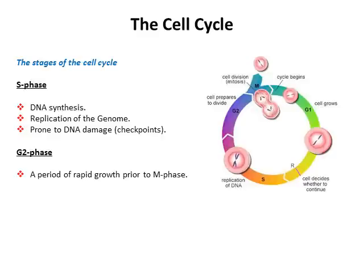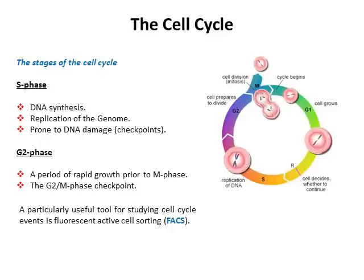Once the cell enters S phase and replicates its DNA — with no damage events, everything okay — it will then exit S phase and enter G2. G2 is a relatively short phase, a period of rapid growth prior to M phase. Following replication of the DNA, G2 allows the cell to get everything ready for the division of the nucleus and cytoplasm in M phase. There's an important checkpoint present at the interface between G2 and M phase that we'll talk about later on.